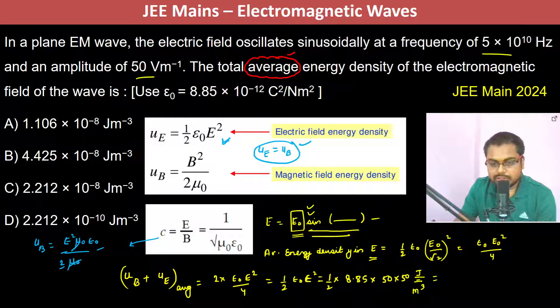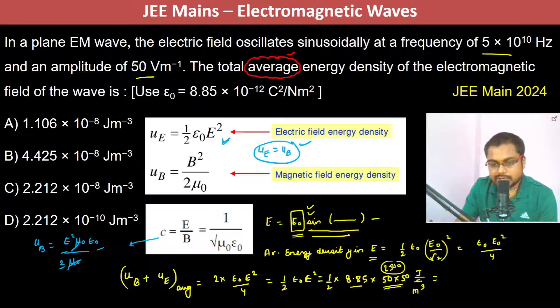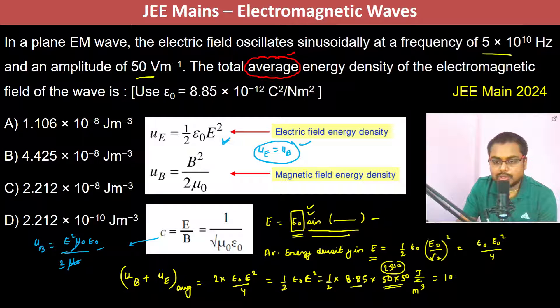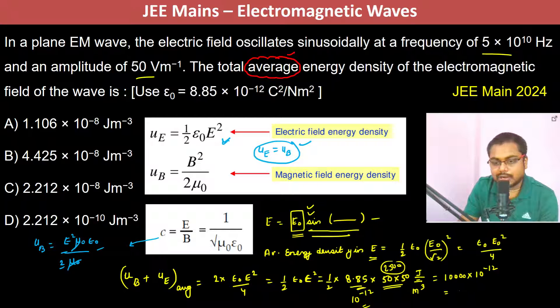So now it's 8 into 2500, which is almost equal to 20,000. So divided by 2, it's almost equal to 10,000. So 10,000 into 10 to the power, because 8.85 with 10 to the power minus 12 is also there, into 10 to the power minus 12. So this is going to be around 1 into 10 to the power minus 8.